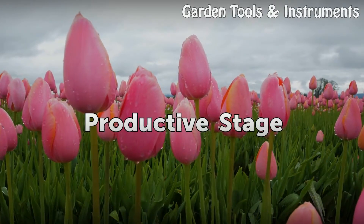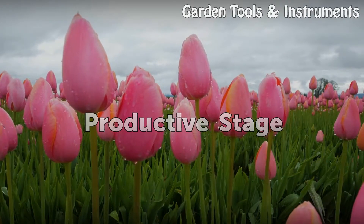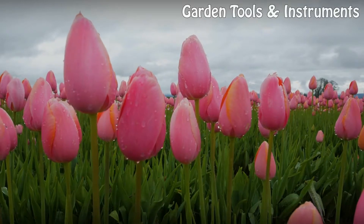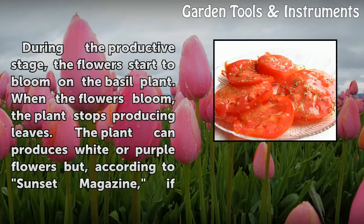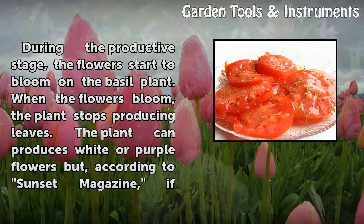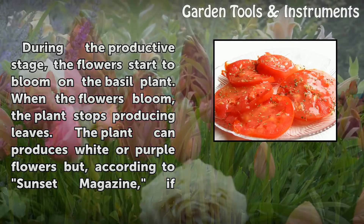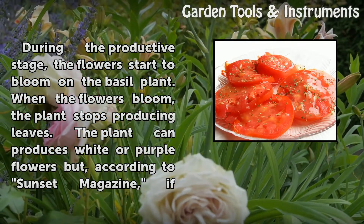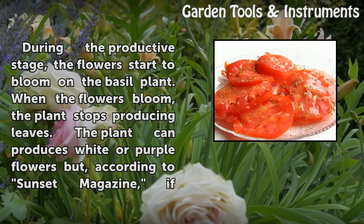Productive Stage: During the productive stage, the flowers start to bloom on the basil plant. When the flowers bloom, the plant stops producing leaves.